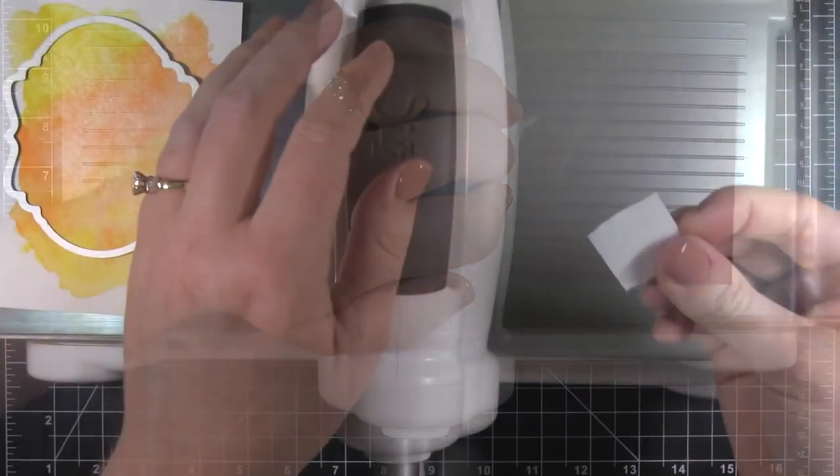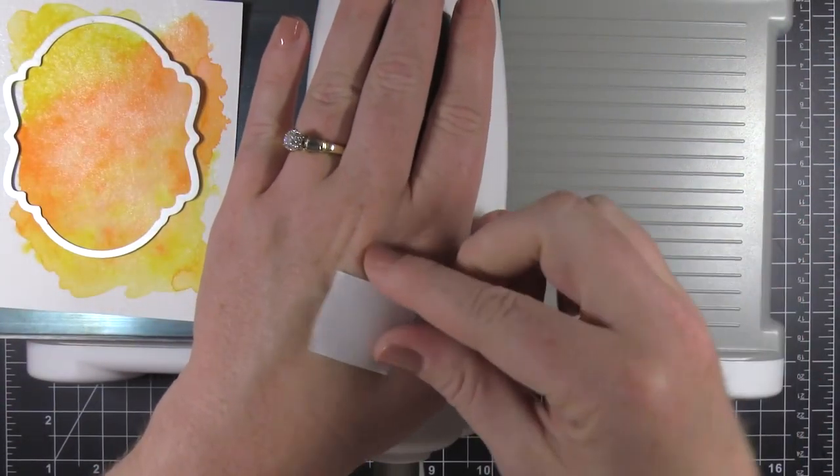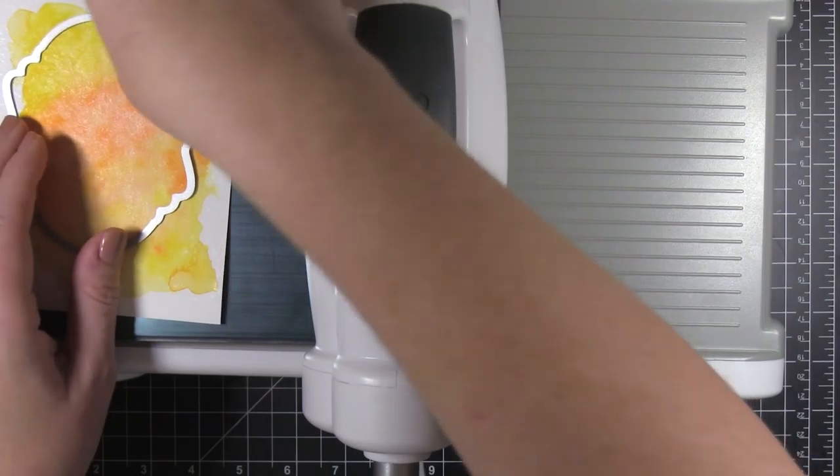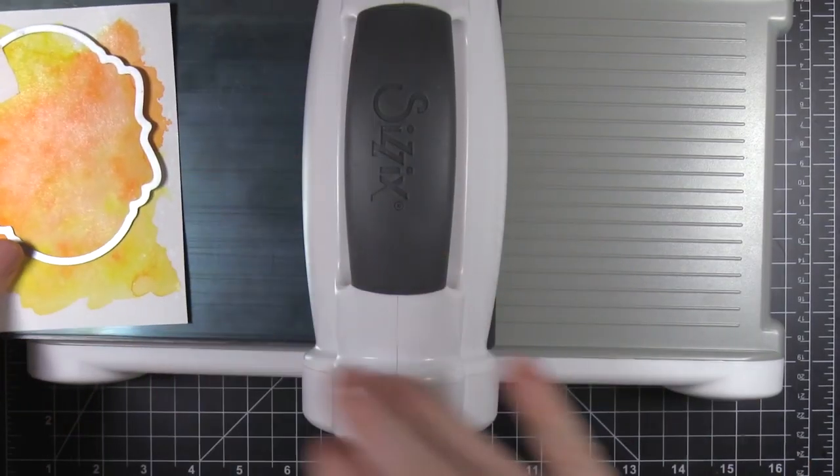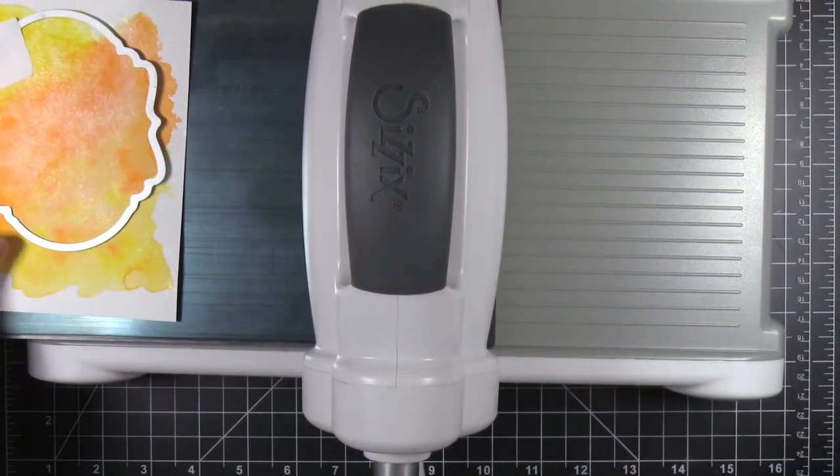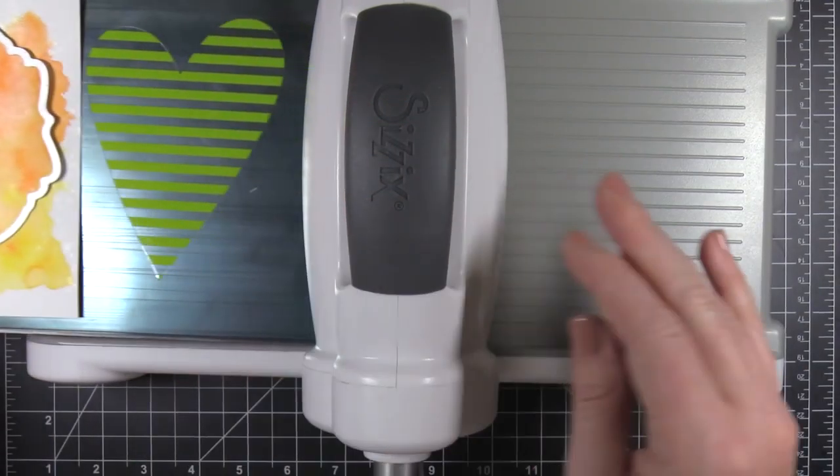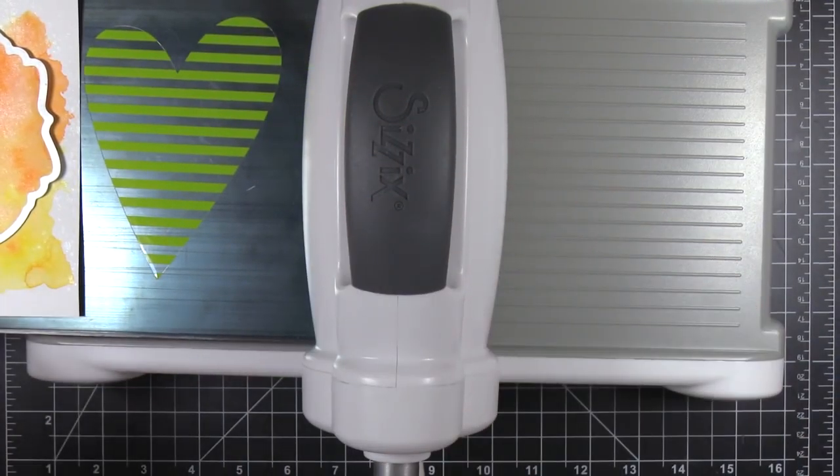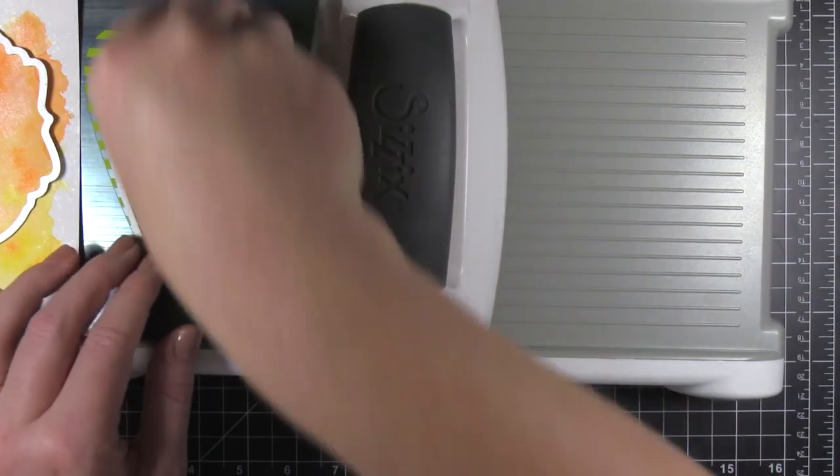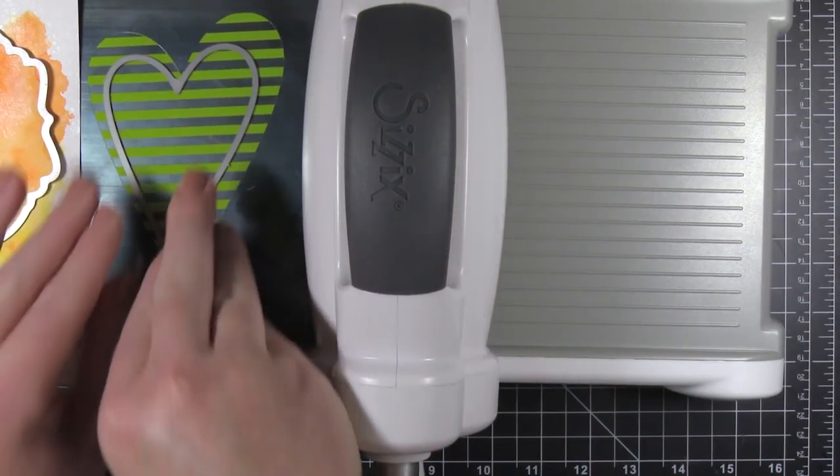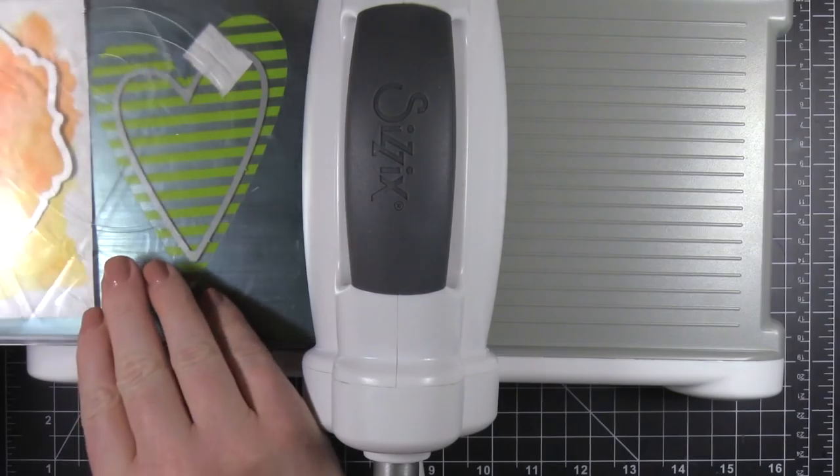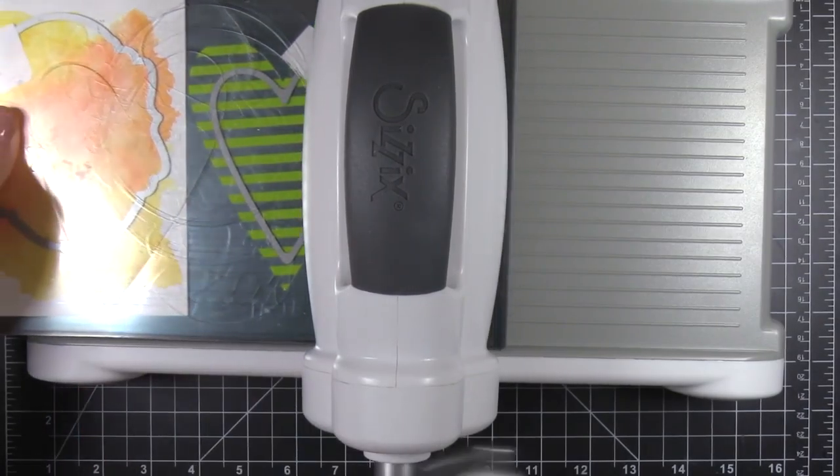And I started with this fancy Hello die. This is from Poppy Stamps. I'm also using these nesting frames. These are from We Are Memory Keepers. And I'm going to cut my watercolor piece out using this nesting frame. And I did cut this bigger heart earlier, but I realized that the scale of it wasn't quite right for that size of nesting frame that I'm using. So I am going to cut that down a little bit.